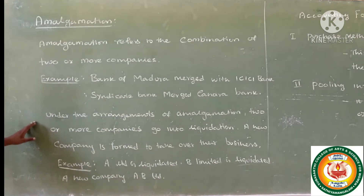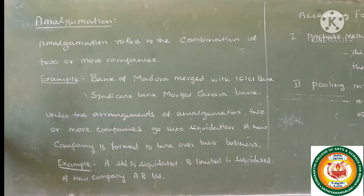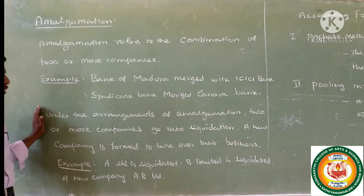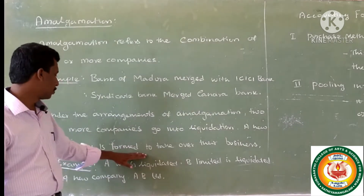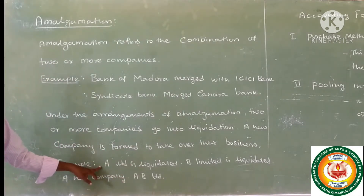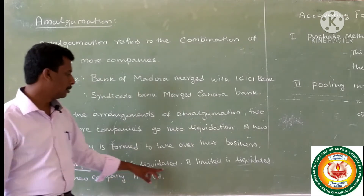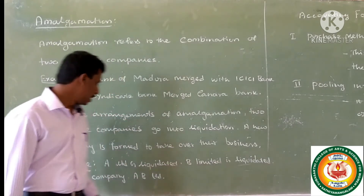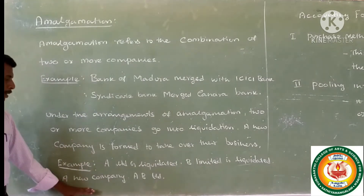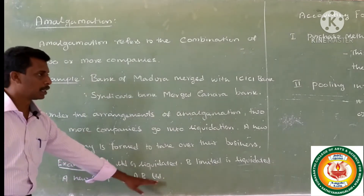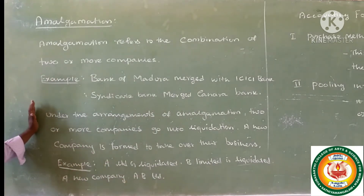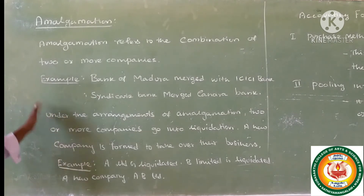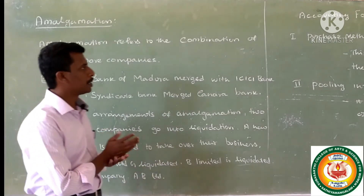Under the arrangement of amalgamation, two or more companies go into liquidation, and a new company is formed to take over the business. For example: A Limited is liquidated, B Limited is liquidated, and a new company — A B Limited — is formed to start and run the business.